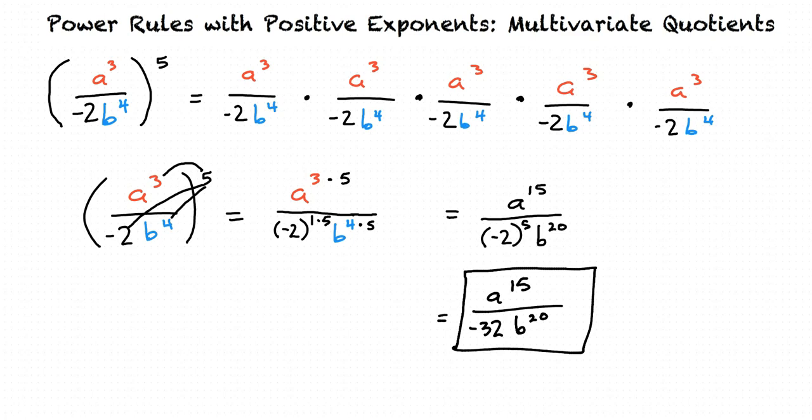Alright, so when we have a fraction with several variables and a coefficient, the outside exponent is distributed to each individual factor in the numerator and in the denominator. Then, using the power rule of exponents, the exponents already inside the fraction are multiplied by the outside exponent.